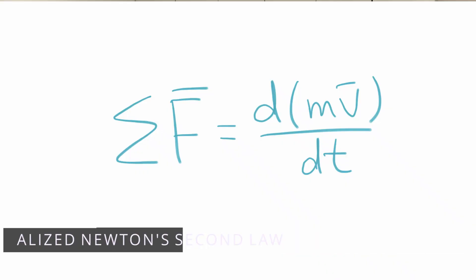For now let's focus on the question of how much fuel we need to change the spacecraft's velocity and go to another orbit. We'll start with the same principle used to derive the thrust equation — Newton's generalized second law, which states that the sum of forces acting on an object equals the change of momentum of that object.